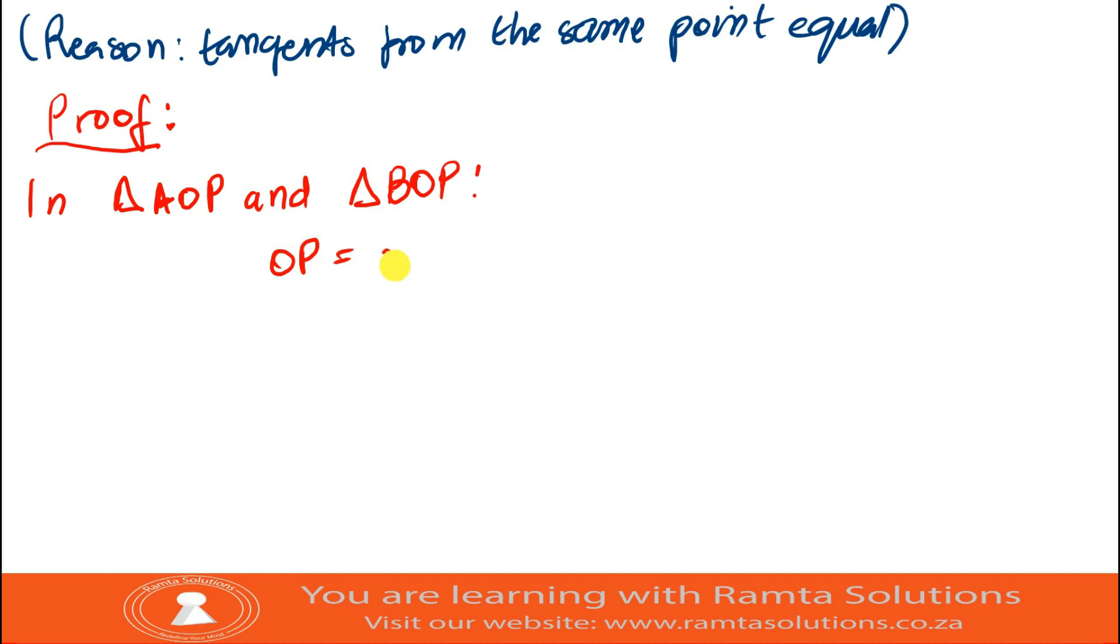OP equals OP. What's the reason? It is a common side. Again, we said OA is equal to OB. What was the reason? We said they are equal radii.